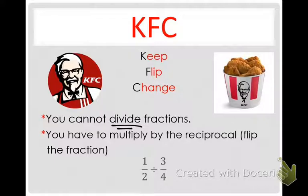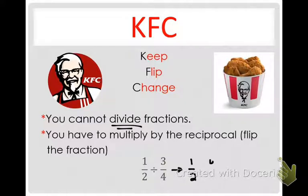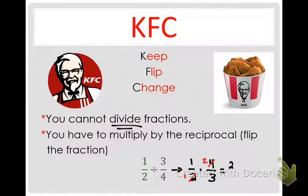Let's look at KFC. We're going to keep the first fraction, so keep 1 half. Then you're going to flip the second one — instead of 3 fourths, it becomes 4 thirds. Then you change the sign to multiplication. Is there anything to cross-reduce? Yes — the 4 and the 2 become 1 and 2. Now multiply across: 1 times 2 is 2, and 1 times 3 is 3. The answer to 1 half divided by 3 fourths is 2 thirds.